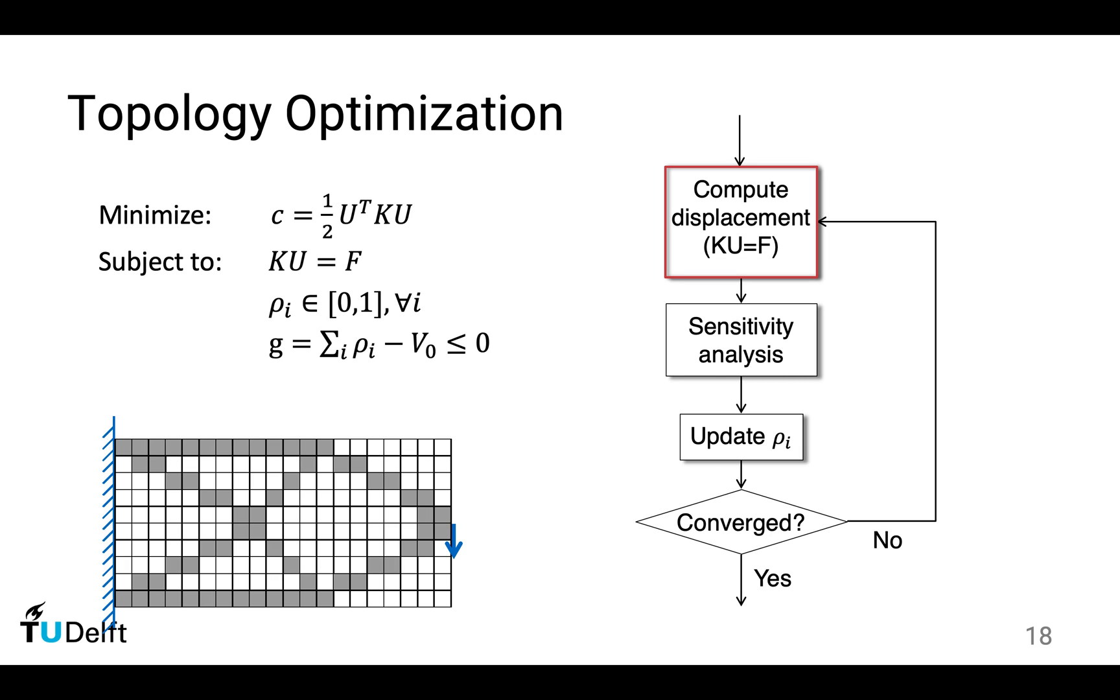In this equation, the unknown is the displacement. We solve this equation to get the displacement of every vertex in the domain. Then we move on to so-called sensitivity analysis. It tells us how sensitive the elastic energy or our objective function is regarding the change of density of a particular point.